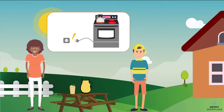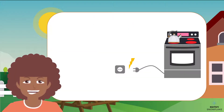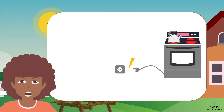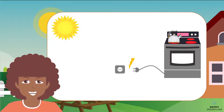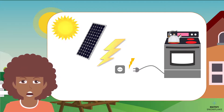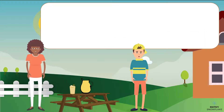And where does this electrical energy come from? It can come from different sources. Sometimes it comes from the sun. The light energy from the sun gets absorbed by solar panels, which then turn it into electricity.